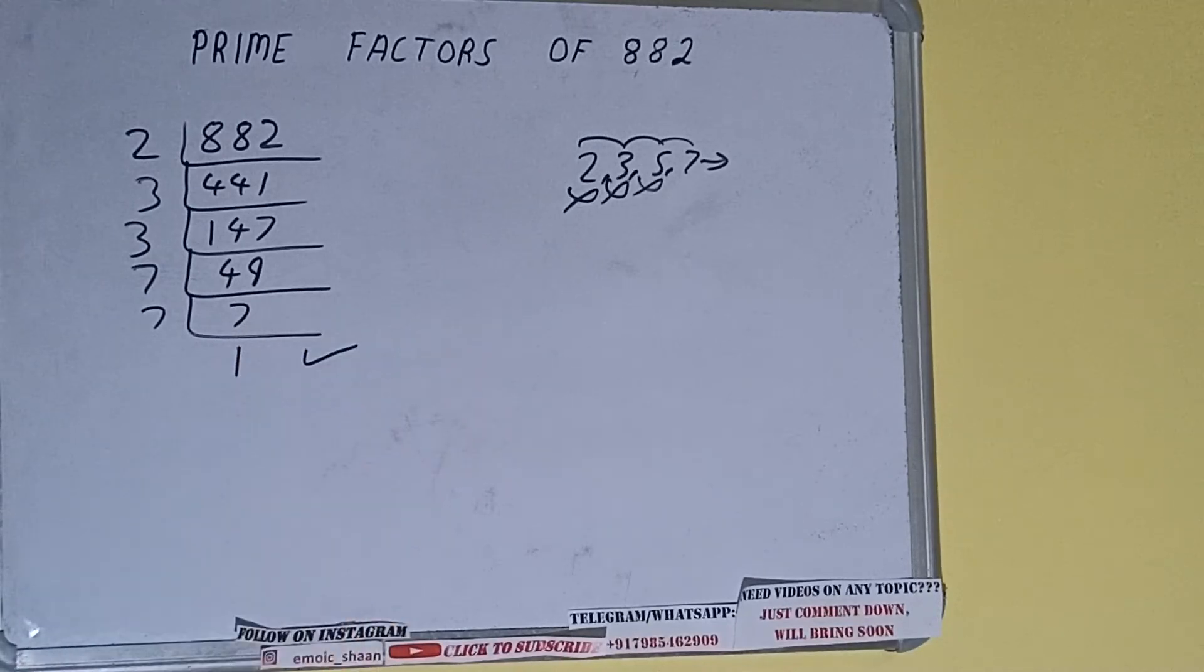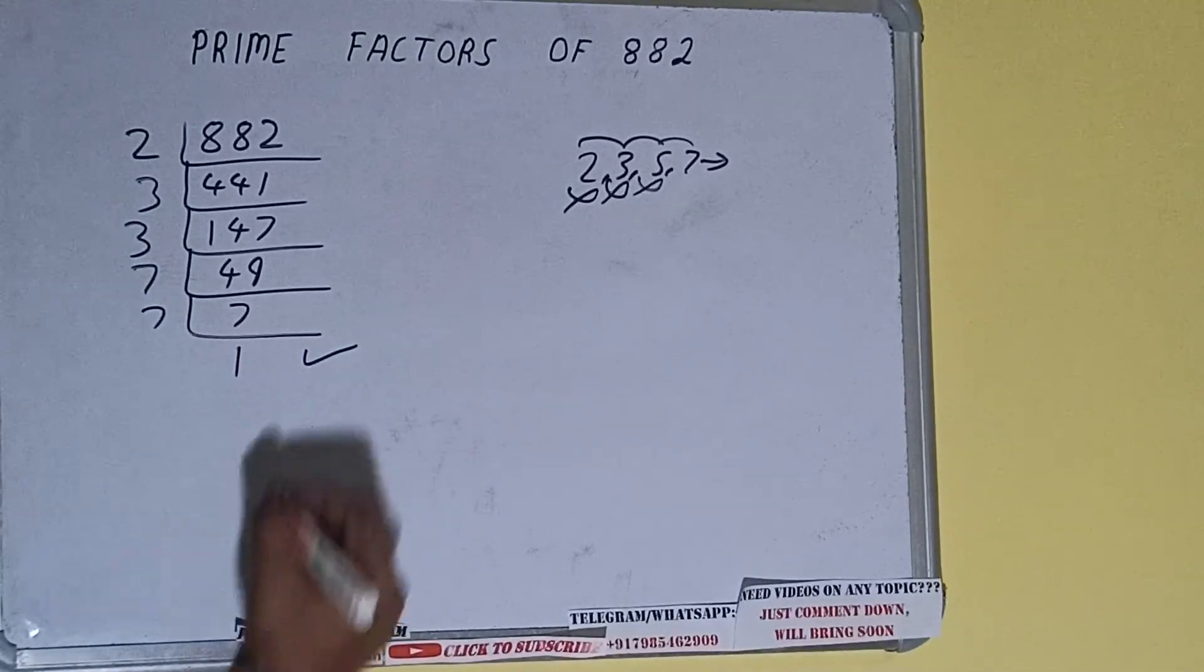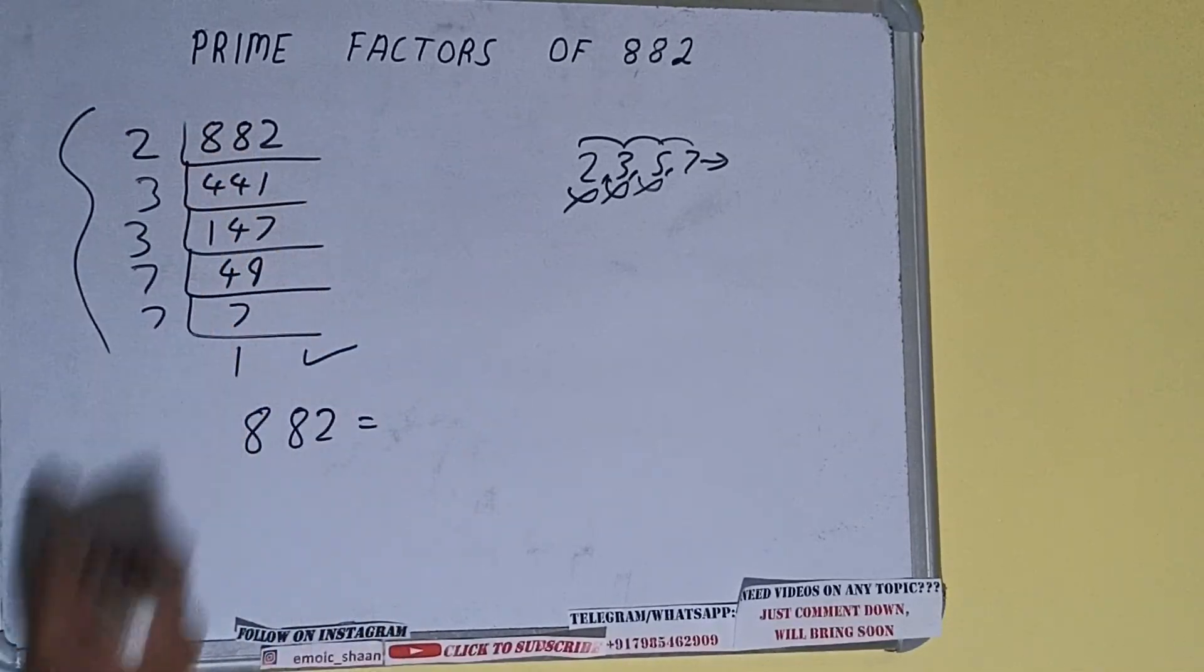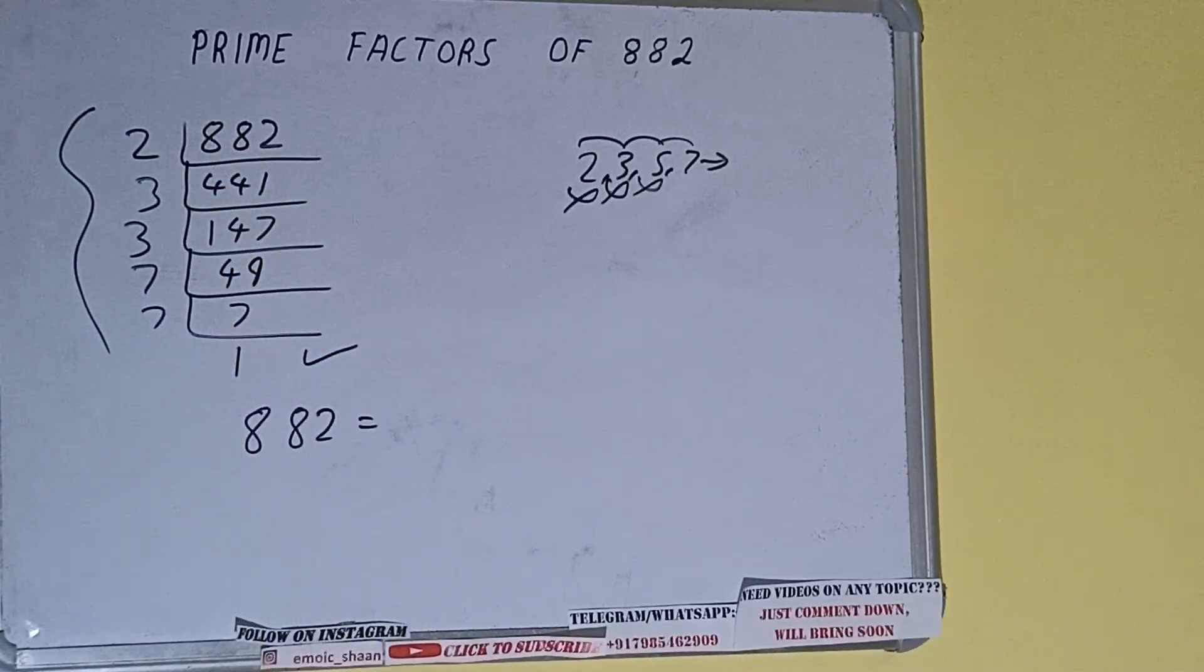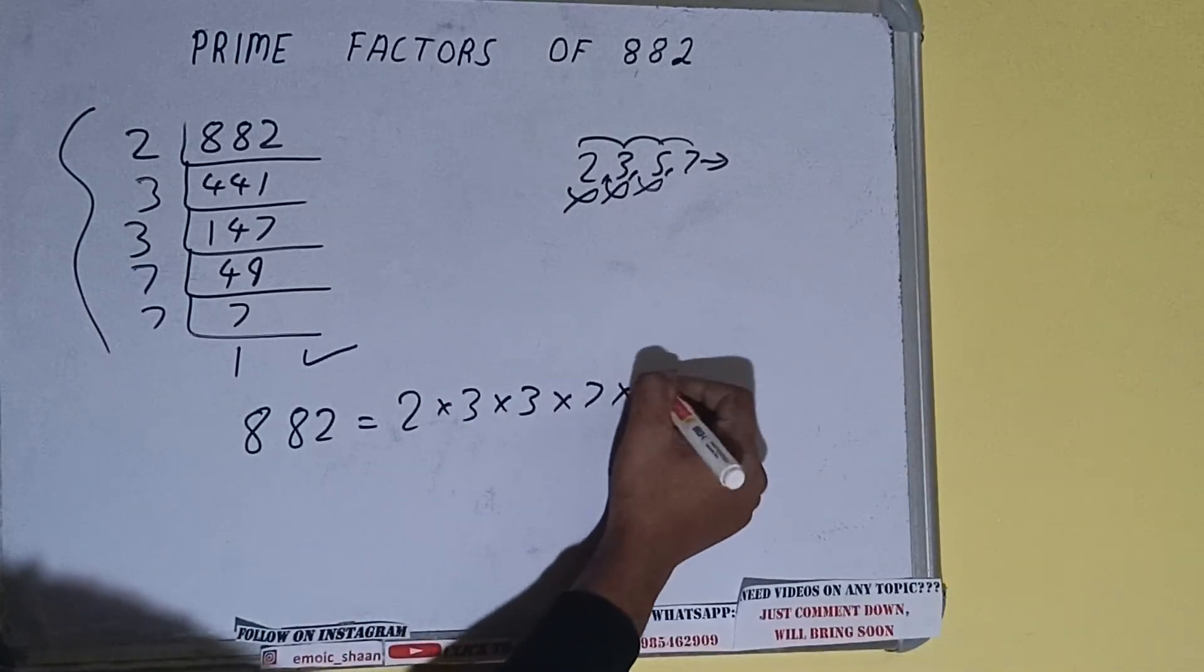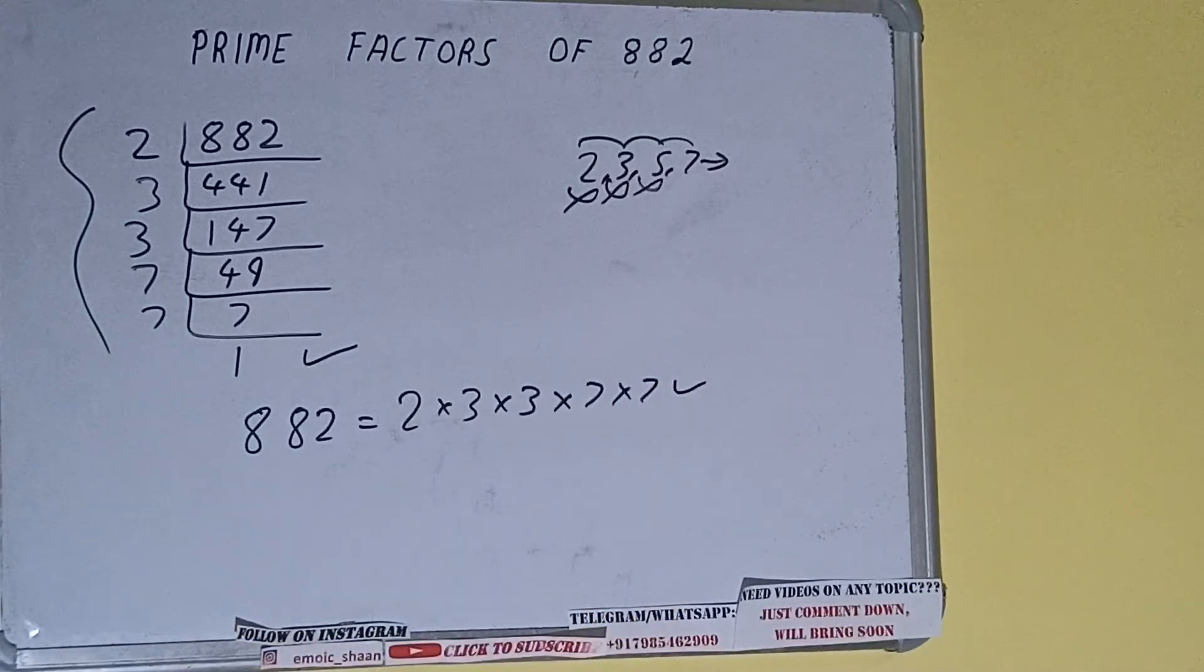Once we get 1, we need to stop and do one last thing. That is, prime factors of 882 equals 2 multiplied by whatever we have on the left-hand side. That is 2 × 3 × 3 × 7 × 7. That will be the answer. So this is all about prime factors of the number 882.